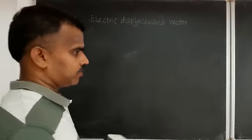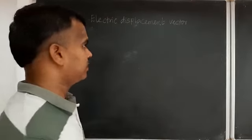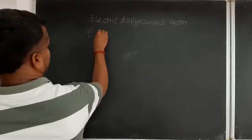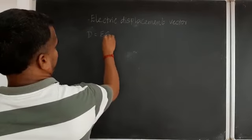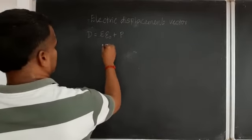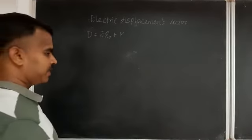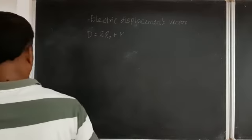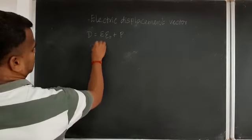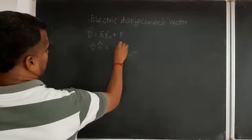On the continuation of electric displacement vector — last we had stopped at D = ε₀E + P. This D is called the displacement vector. We can write the last equation as D·n̂ = σ.